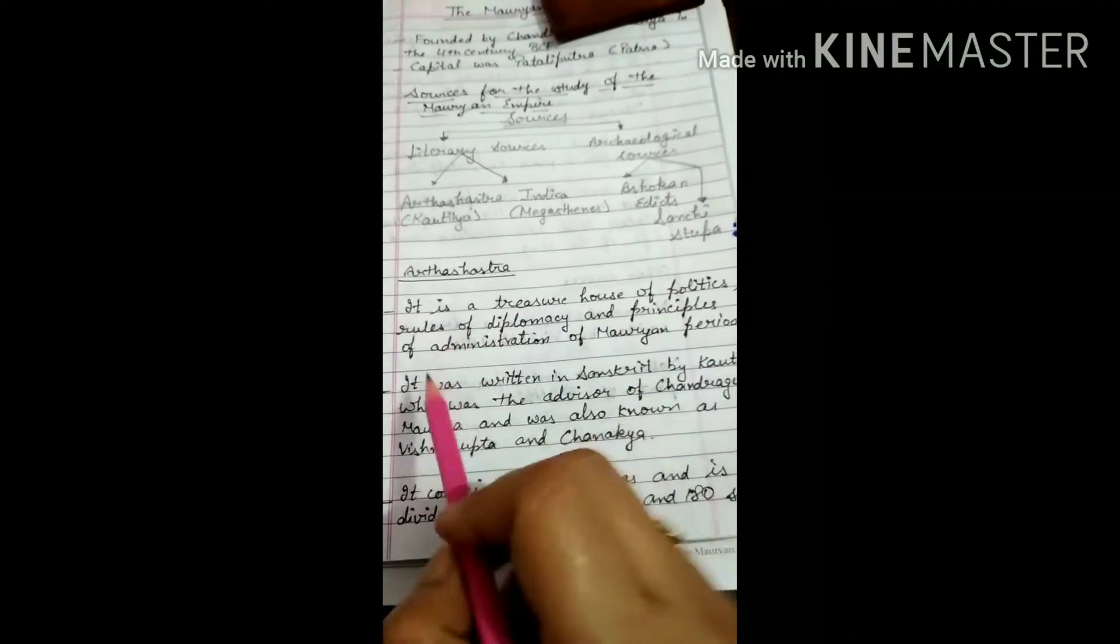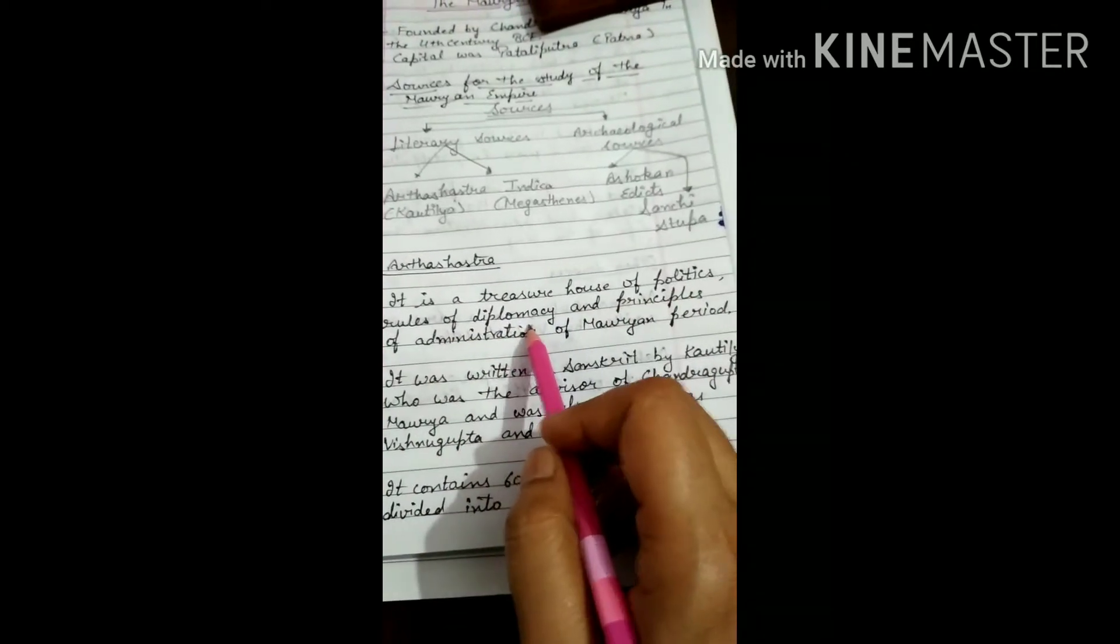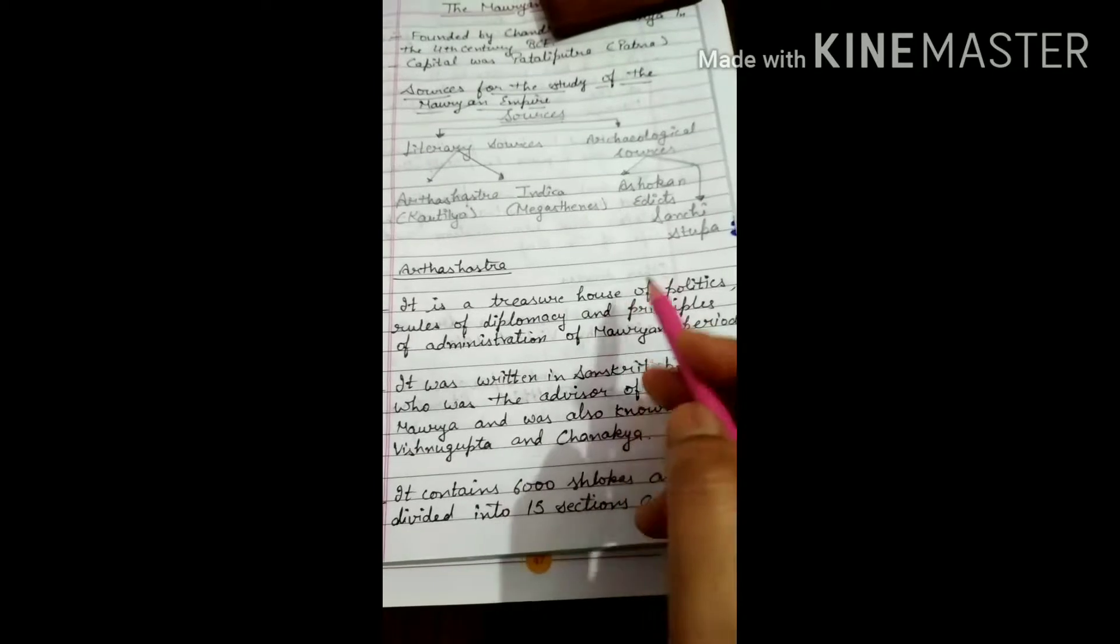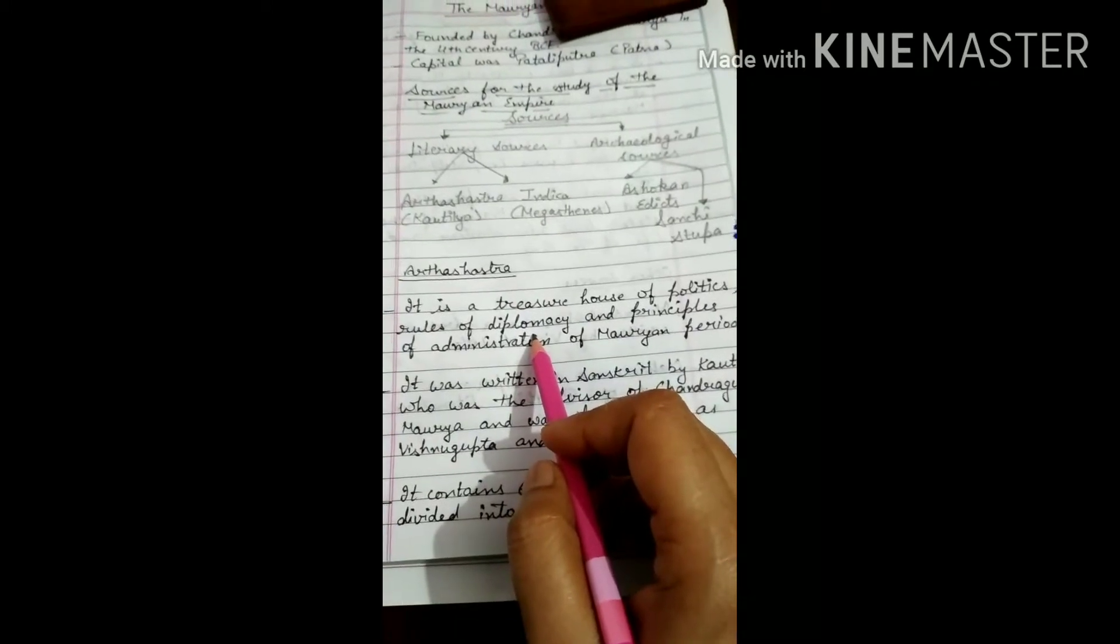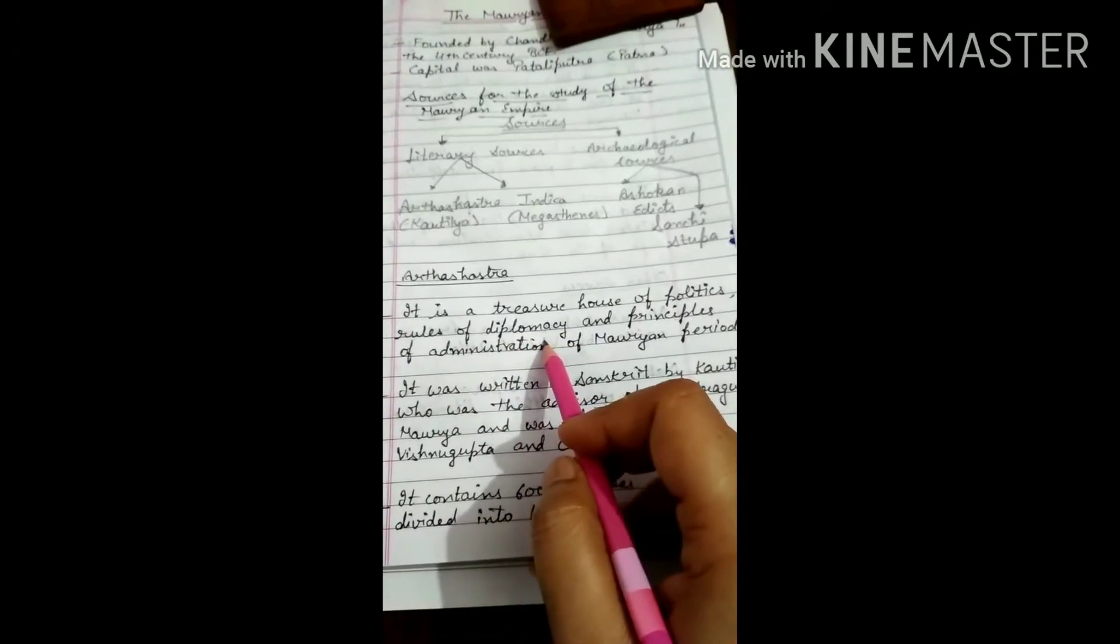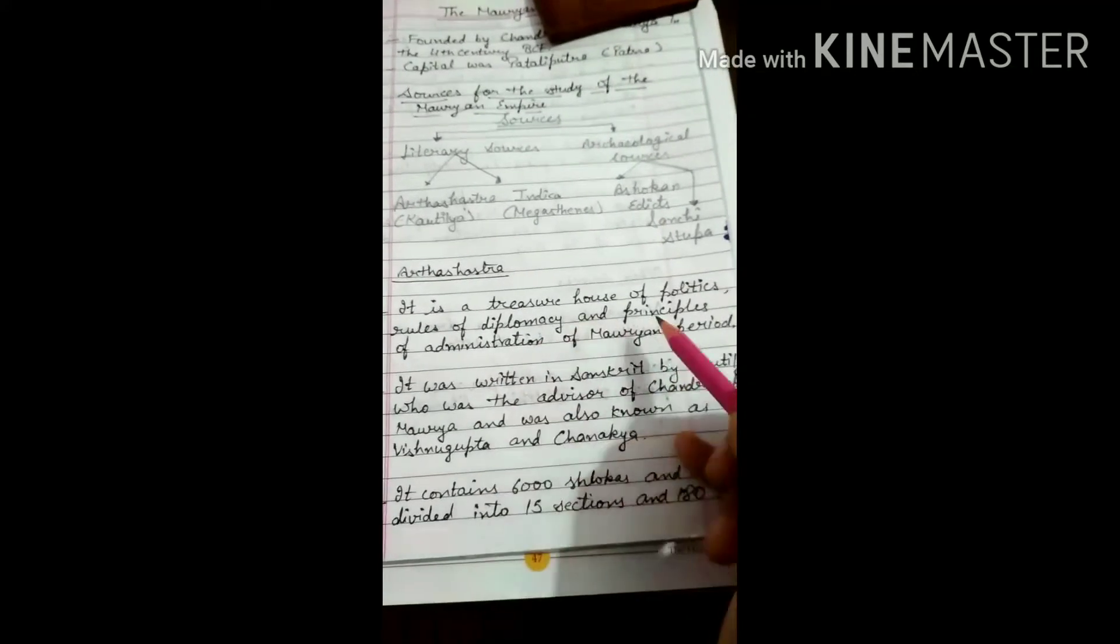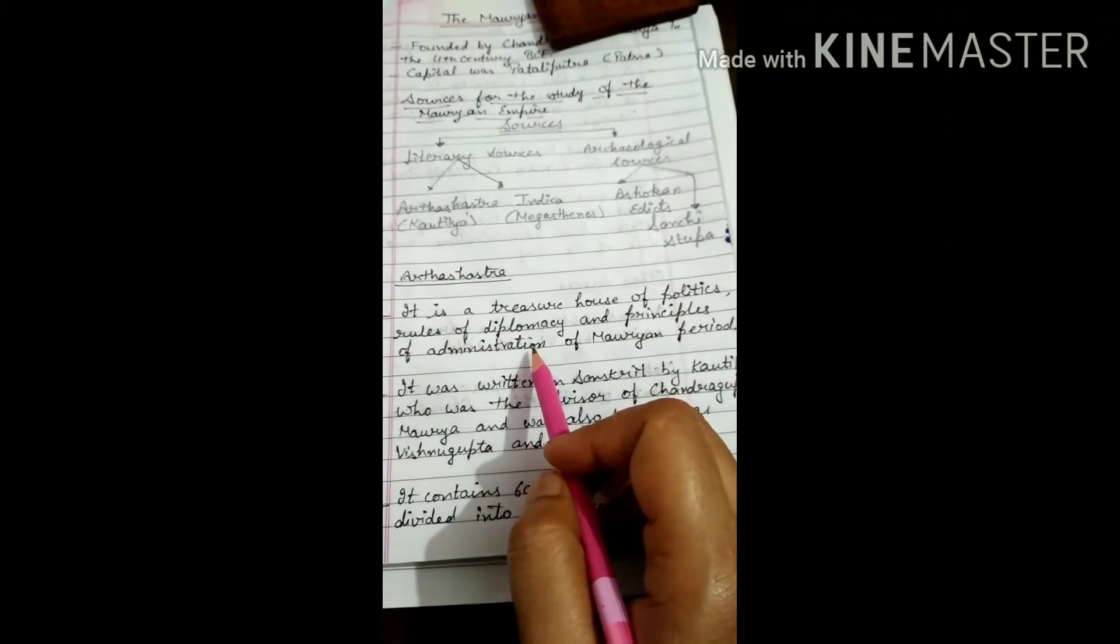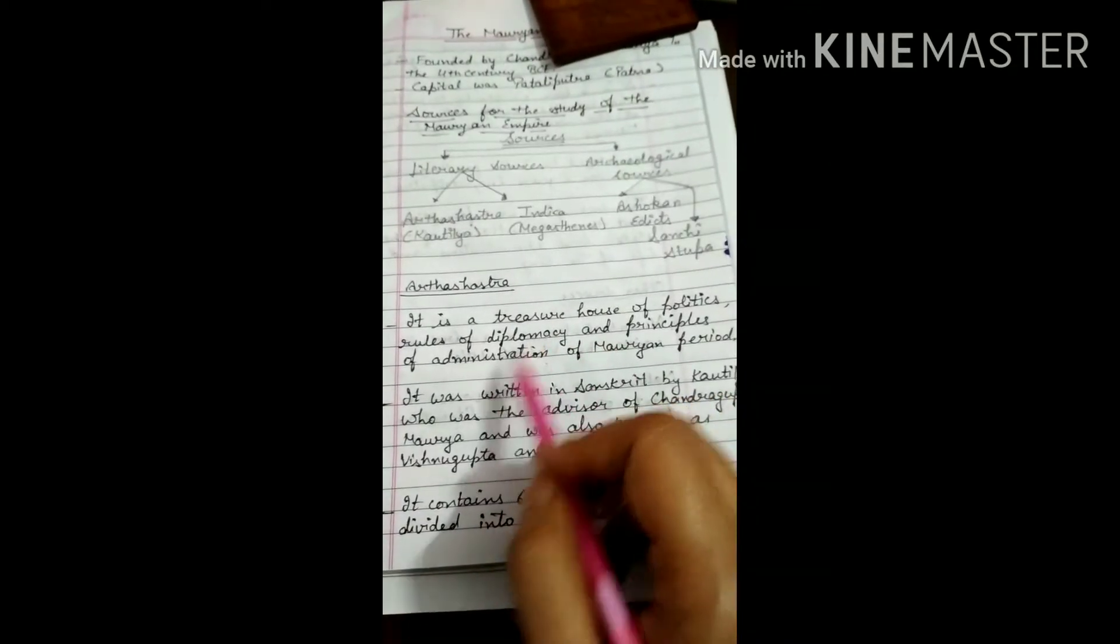First of all, I am going to tell you about the Arthashastra. What was Arthashastra? It is a treasure house of politics, rules of diplomacy, and principles of administration of the Mauryan period. Treasure house means it is a book that is all about politics, how the king can rule diplomatically, how he can maintain relationships, and the principles of administration means how to work for people's welfare. All these things are given in the Arthashastra.